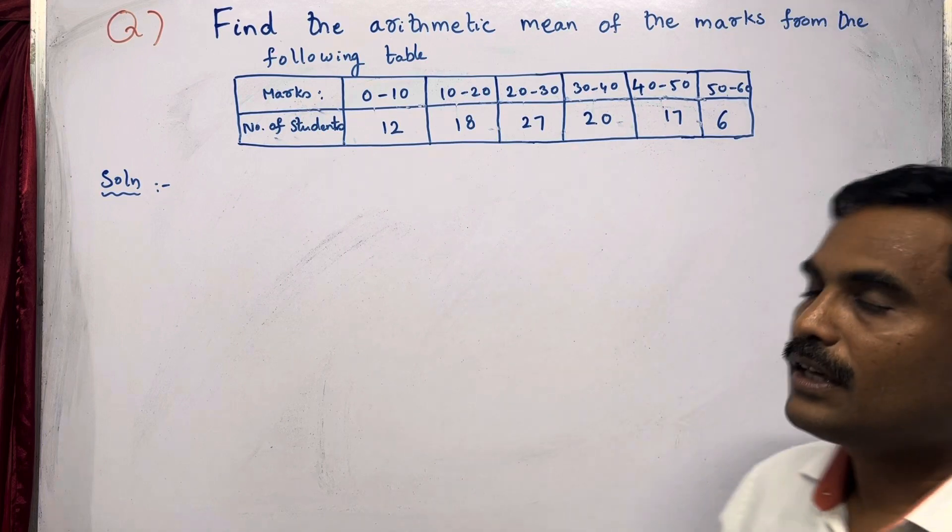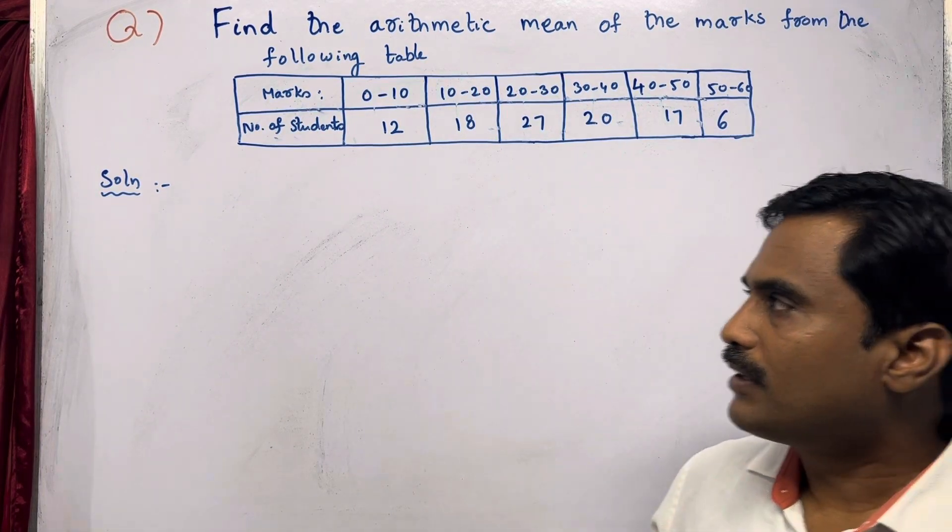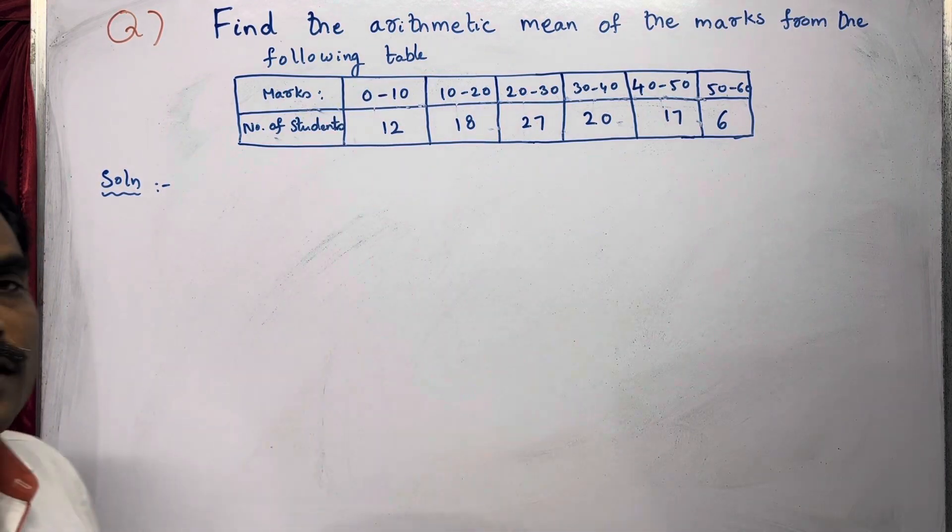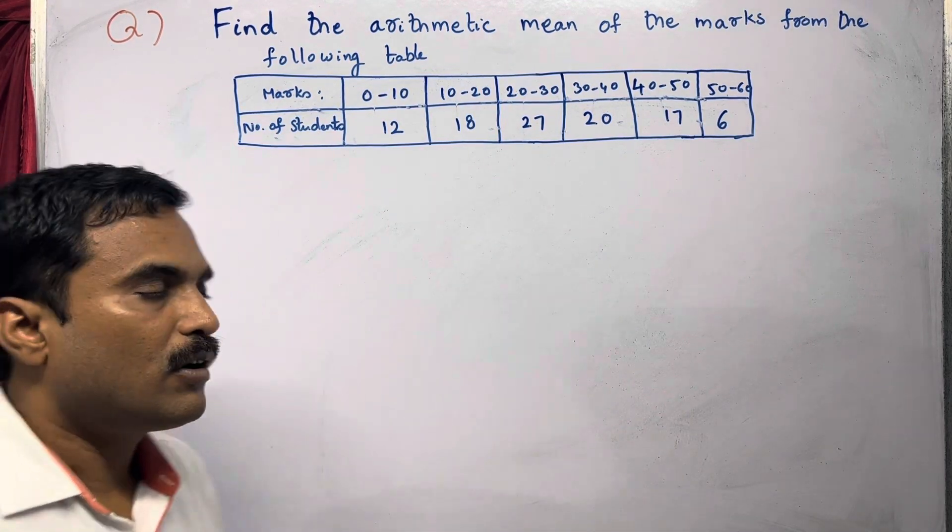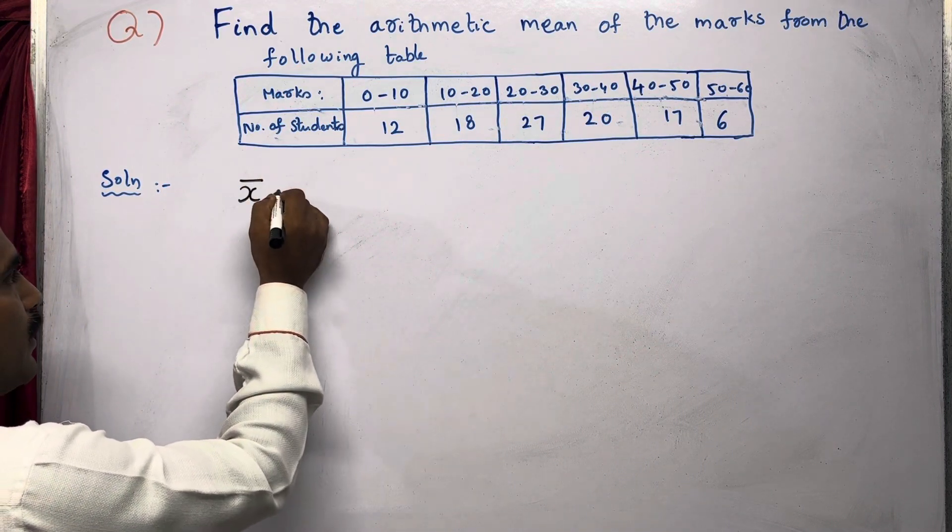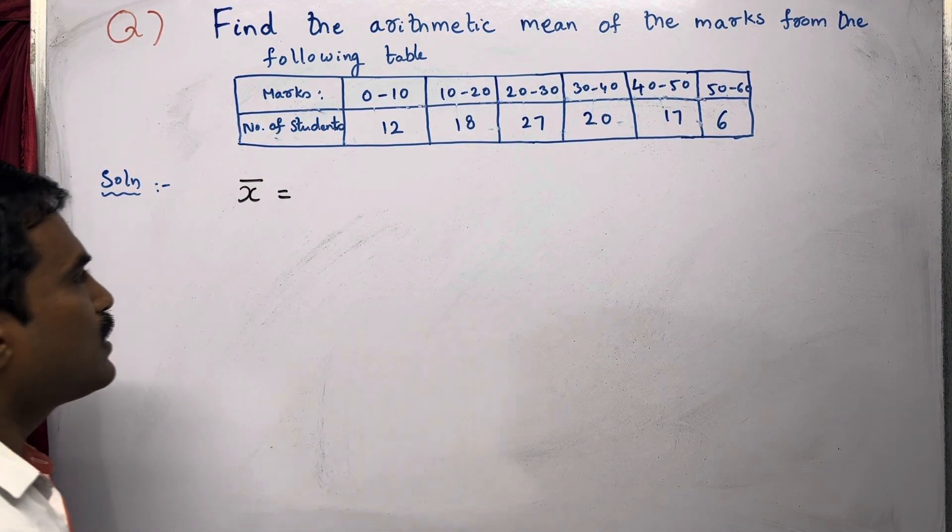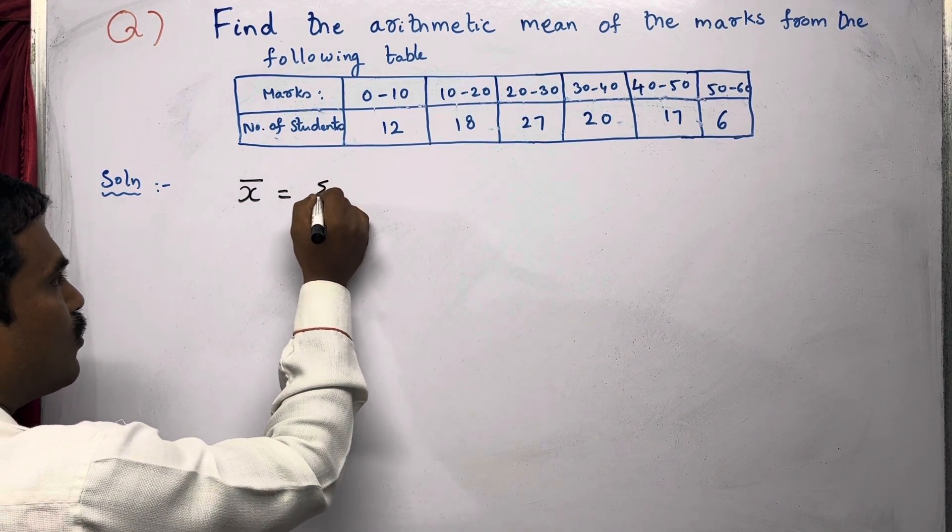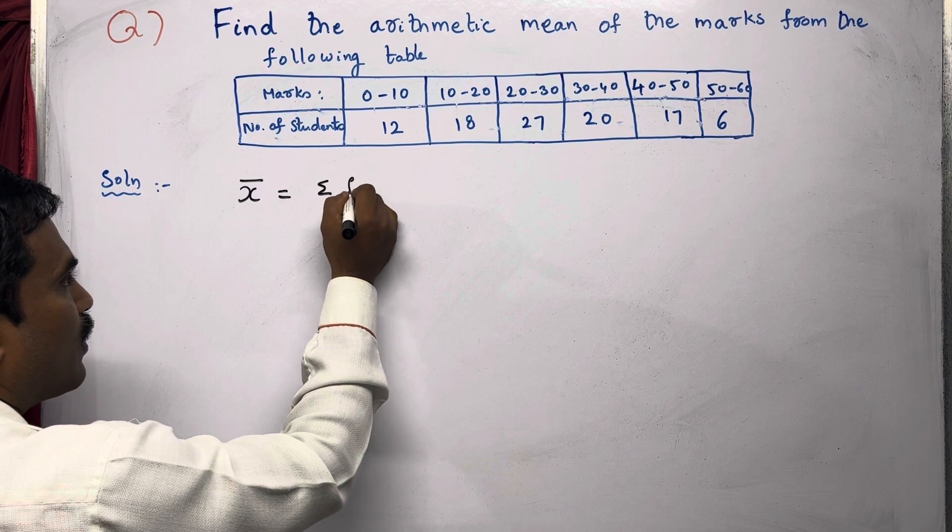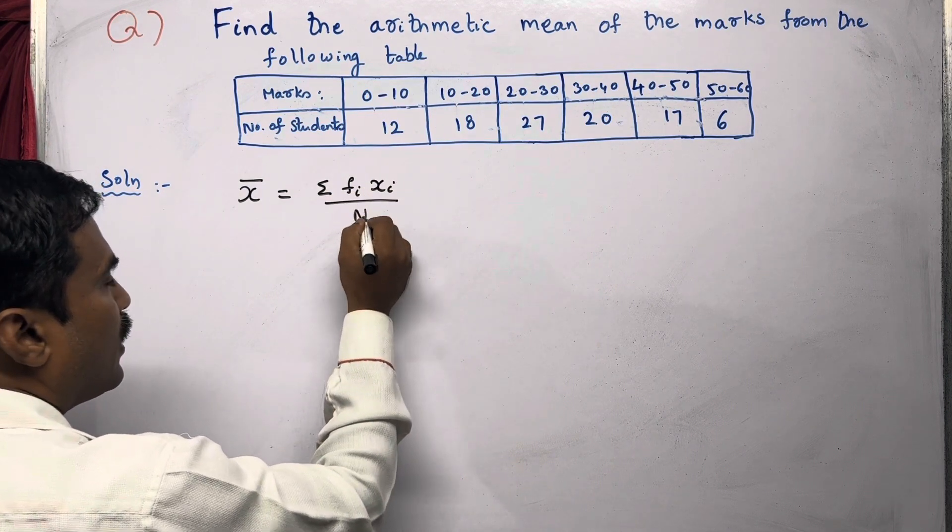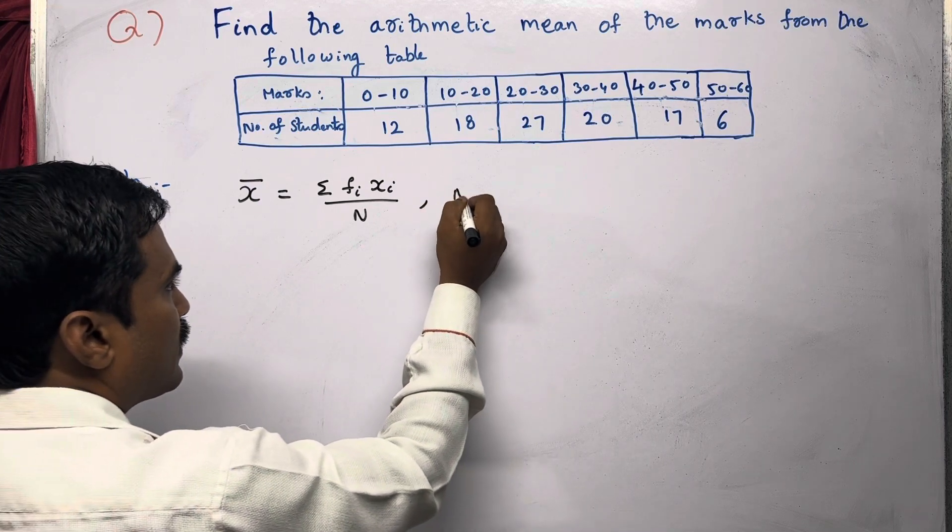For this, we are going to use the formula. As you know, arithmetic mean is denoted by the symbol x̄ (x bar). X̄ can be found using this formula: since they have given group data, x̄ = Σ(Fi × Xi) / N, where N is ΣFi.